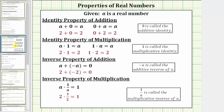Next, we have the identity property of addition, which is given as a plus zero equals a, or zero plus a equals a, where zero is called the additive identity.